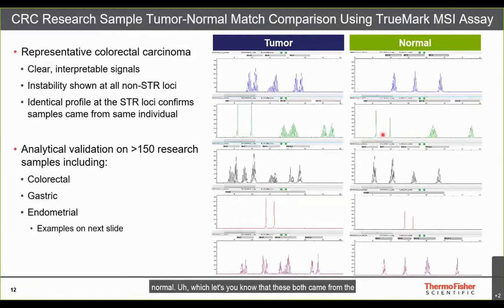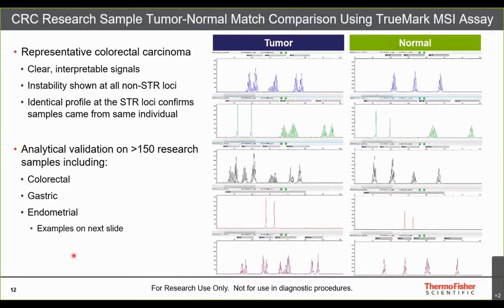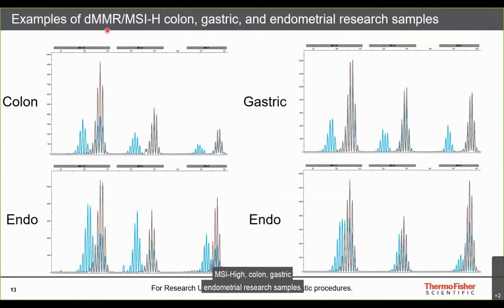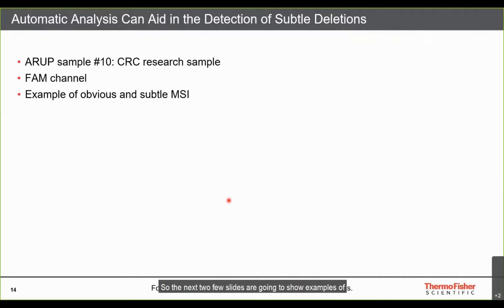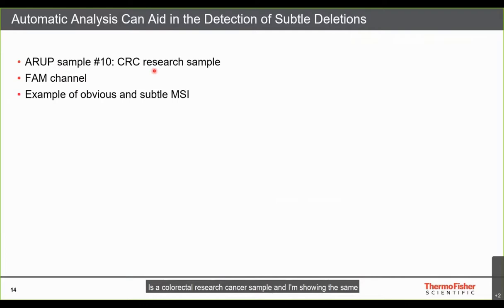Analytical validation was performed on greater than 150 research samples from colorectal, gastric, and endometrial cancers. Examples show deficient mismatch repair MSI-high colon, gastric, and endometrial research samples with very distinctive deletions in the tumor samples. We wanted to develop an automatic calling algorithm because some MSI cases are subtle — for example, in NR21 the difference between tumor and normal is only one base pair, making manual calling by the human eye very difficult.